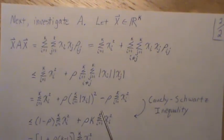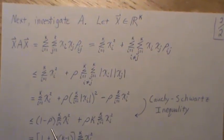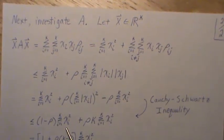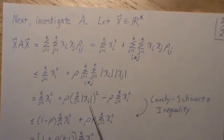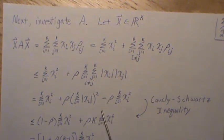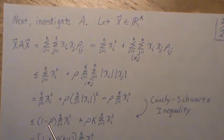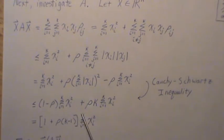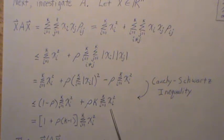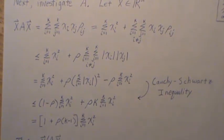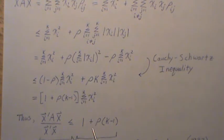Combining terms, we get [1 + ρ(k-1)] times the sum of x_i squared. Using the Cauchy-Schwarz inequality on the relevant piece, this line is a little bit bigger than the previous line. Right factoring out the sum of x_i squared and dividing both sides by this quantity, we get x^T A x over x^T x is less than or equal to [1 + ρ(k-1)].